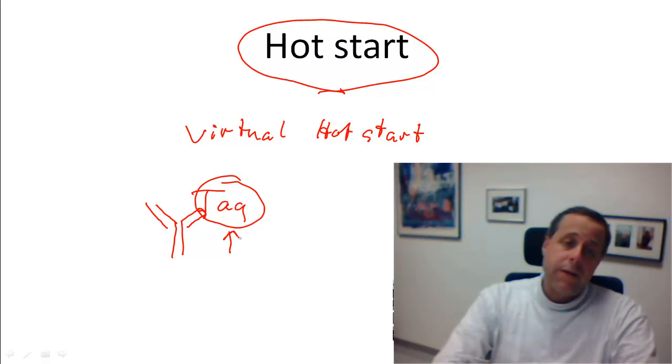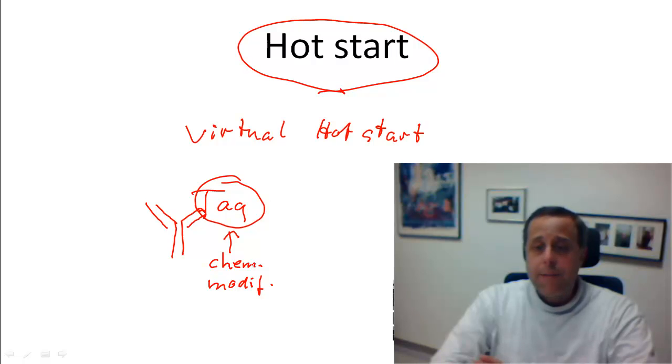The same idea holds true for temperature sensitive chemical modifications. Chemical modifications. Those would again come off at the high temperature of the first PCR cycle and then allow Taq polymerase to do its job, but not before while you're setting up the reaction.